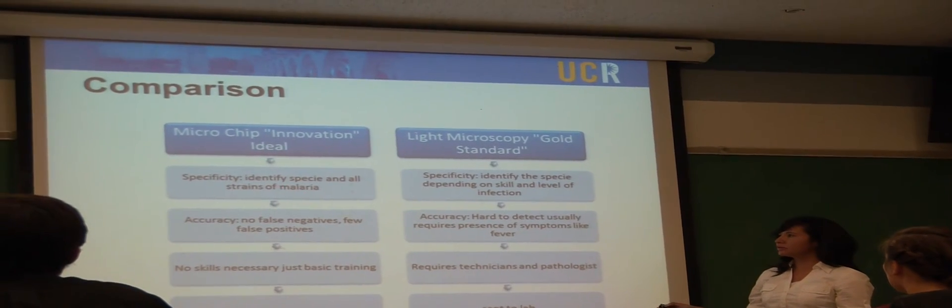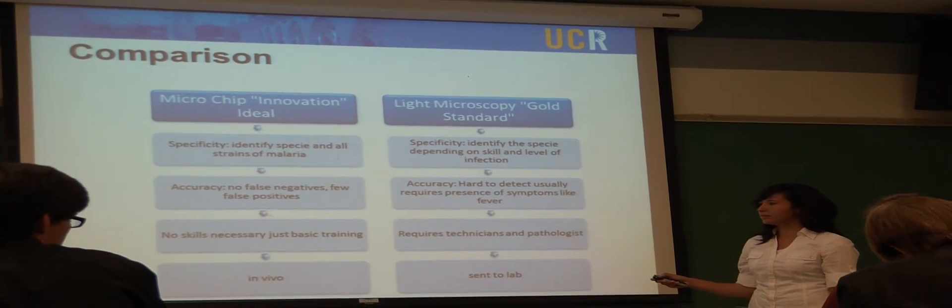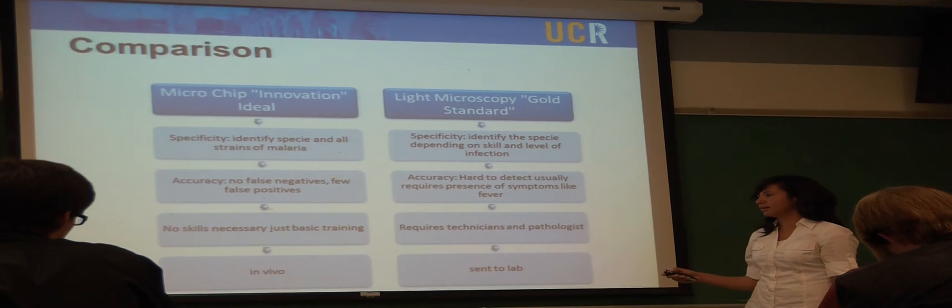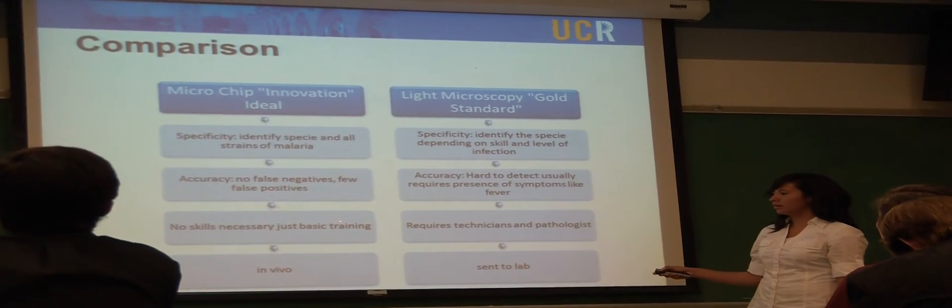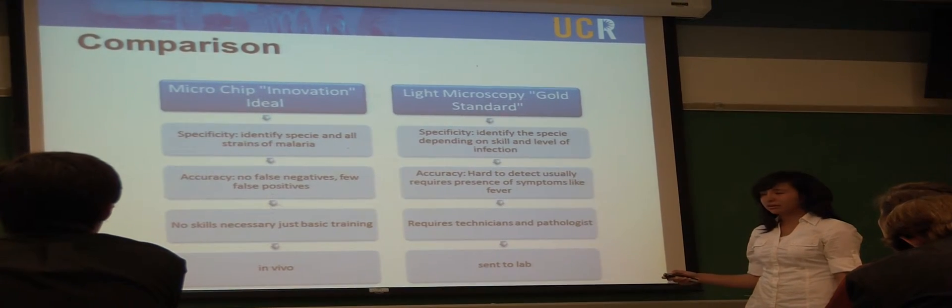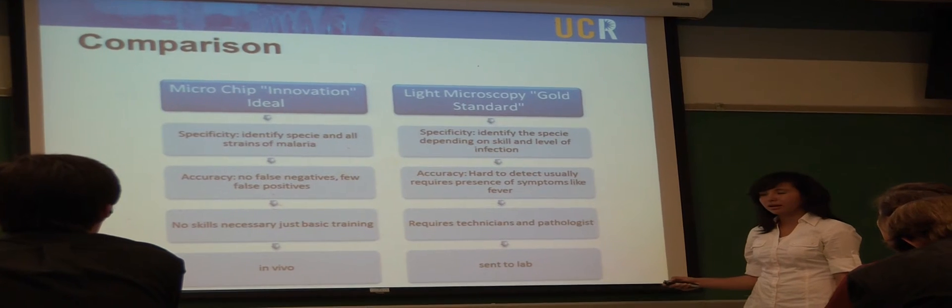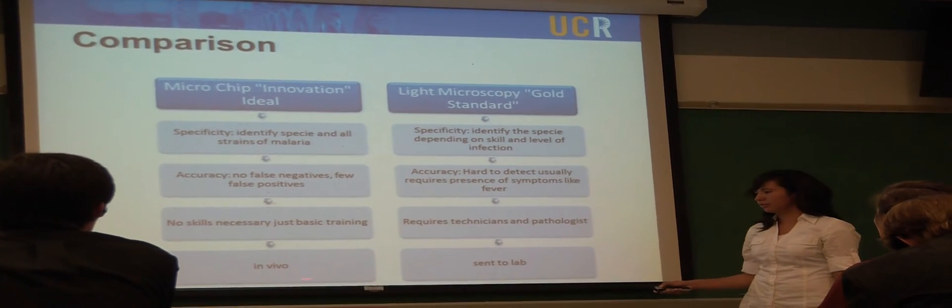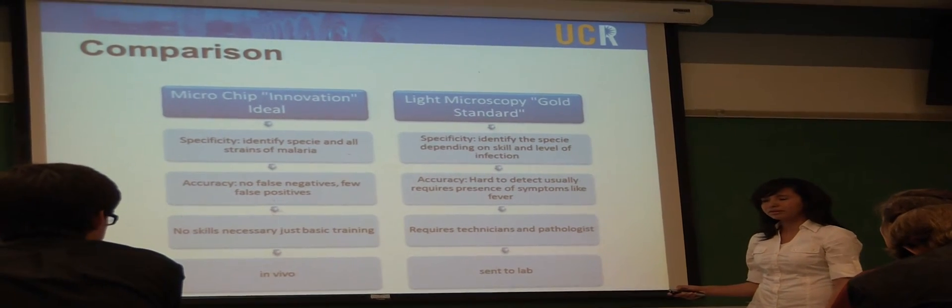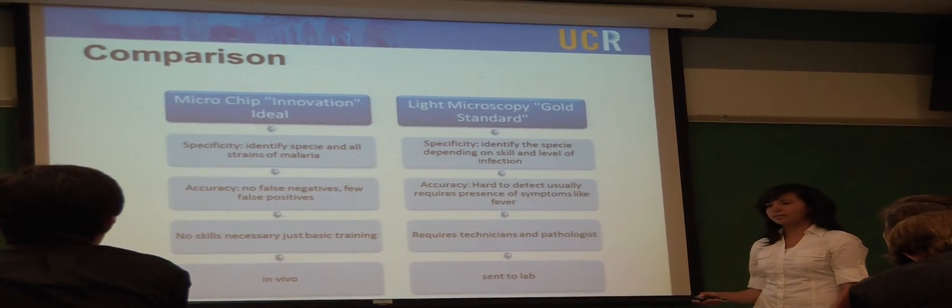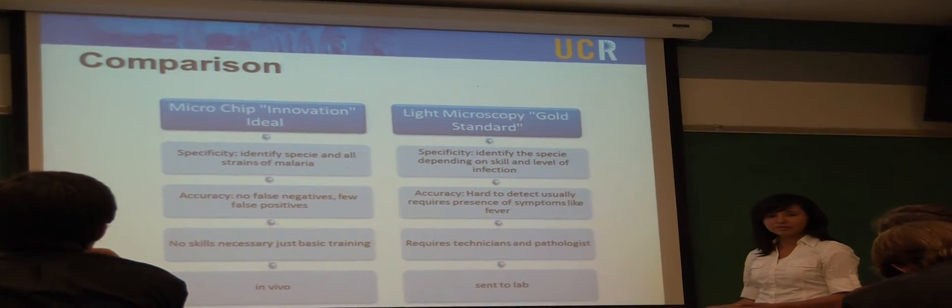The prototypes are also designed to be highly specific and able to identify all strains of malaria. This means that the device is more valuable and useful. The biggest advantage is that we eliminate the skilled technicians, like the pathologists, and this reduces the cost. Also, the chip can be used on the spot, and this reduces the time processing. It makes it faster to diagnose and treat the individuals, and this makes the difference in saving lives.